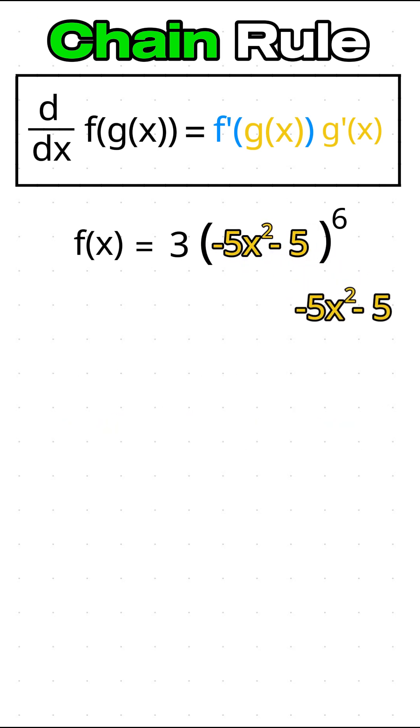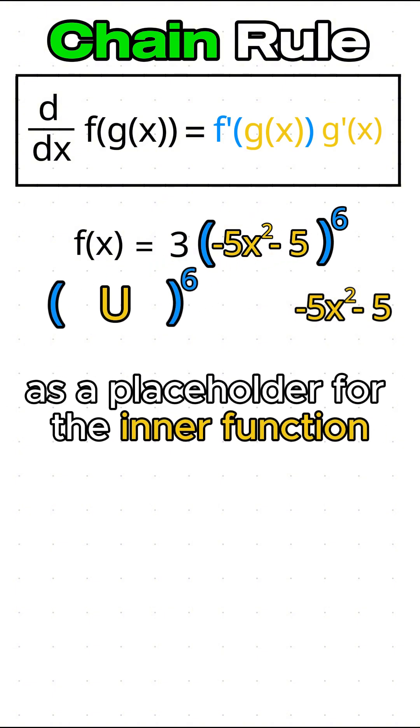Next, identify the outer function. The outer function is u to the 6. You could think of u as a placeholder for the inner function.